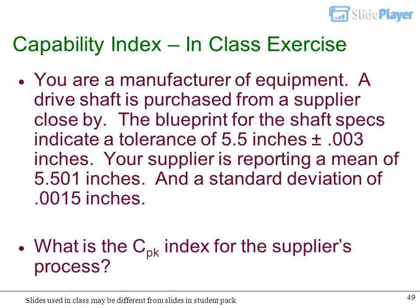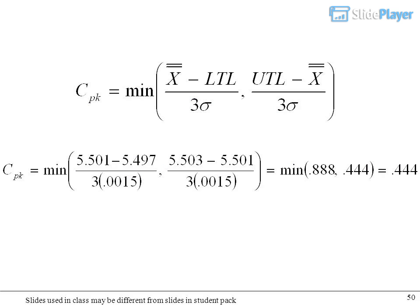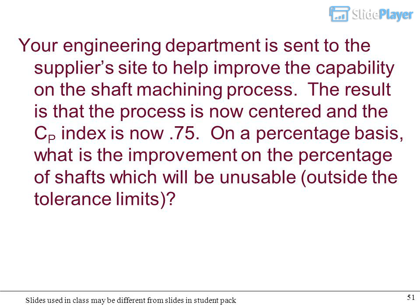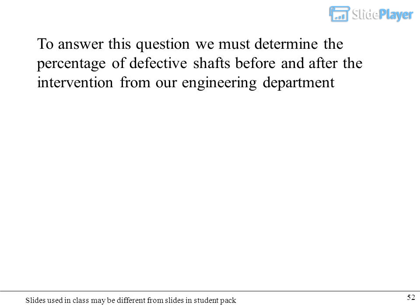Capability index in-class exercise: You are a manufacturer of equipment. A drive shaft is purchased from a supplier. The blueprint specs indicate a tolerance of 5.5 inches plus minus 0.003 inches. Your supplier is reporting a mean of 5.501 inches and a standard deviation of 0.0015 inches. What is the CPK index for the supplier's process? Your engineering department is sent to help improve capability. The result is that the process is now centered and the CP index is now 0.75. On a percentage basis, what is the improvement on the percentage of shafts which will be unusable?